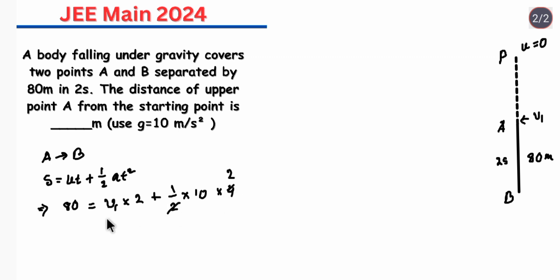So if we calculate this we will get 2V1 is equal to 80 minus 20 which is 60. So V1 is equals to 30 meter per second. So at V1 the velocity is 30 meter per second.